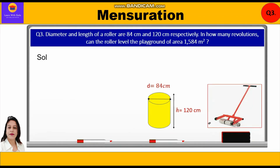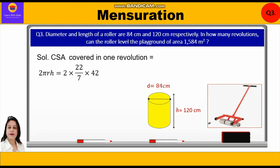Curved surface area covered in one revolution = 2πrh = 2 × (22/7) × 42 × 120 = 31,680 cm². Converting to m²: divide by 100 × 100 = 3.168 m².